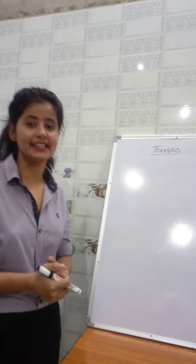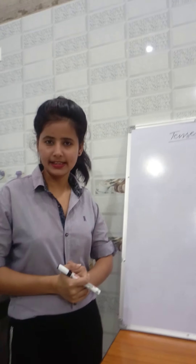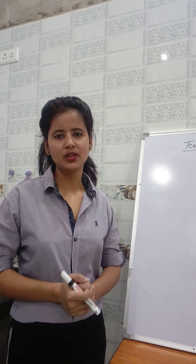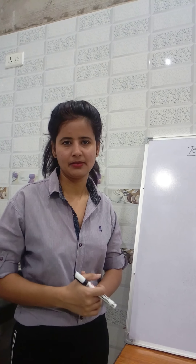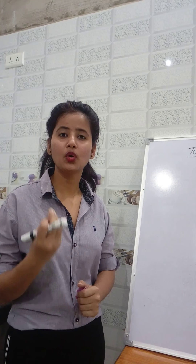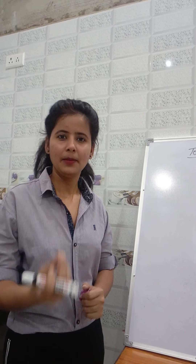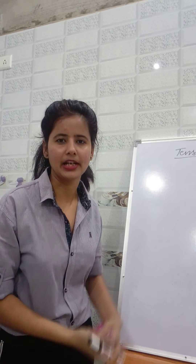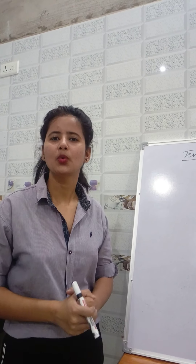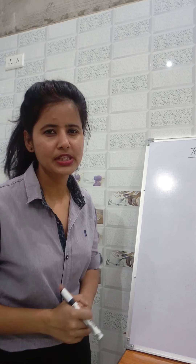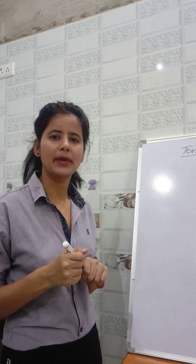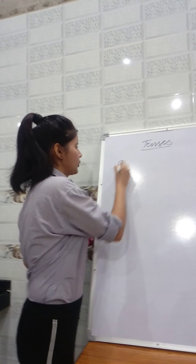So let's start the tenses. There are three types of tenses — everybody knows about it: present, past, and future. Each tense consists of four parts, meaning there will be four parts for present, for past, and for future as well. In total, there will be twelve tenses. So we are going to study twelve tenses, and we will start with the present tense.